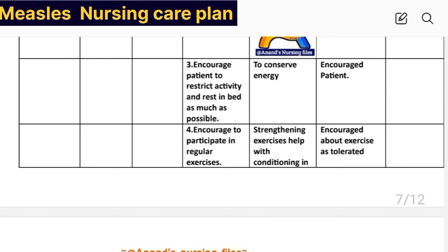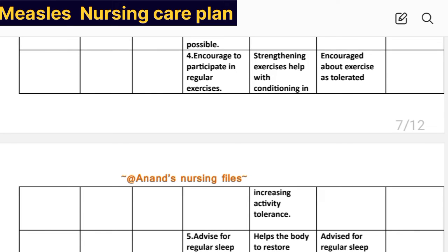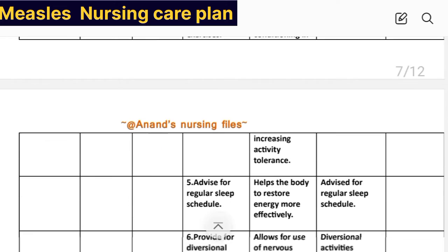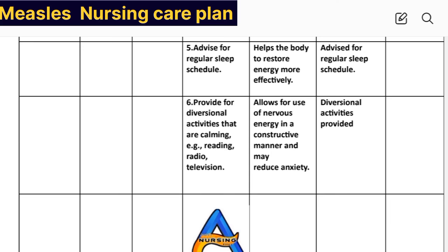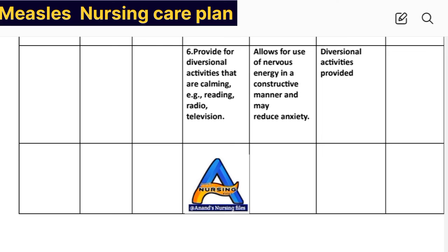Intervention number two: provide a quiet environment with a cool room and decreased sensory stimuli. Rationale: reduces stimuli that may aggravate agitation, hyperactivity, and insomnia. Implementation: quiet environment provided. Intervention number three: encourage patient to restrict activity and rest in bed as much as possible. Rationale: to conserve energy. Intervention number four: encourage participation in regular exercises. Rationale: strengthening exercises help with conditioning and increase activity tolerance. Implementation: exercise increased as tolerated.